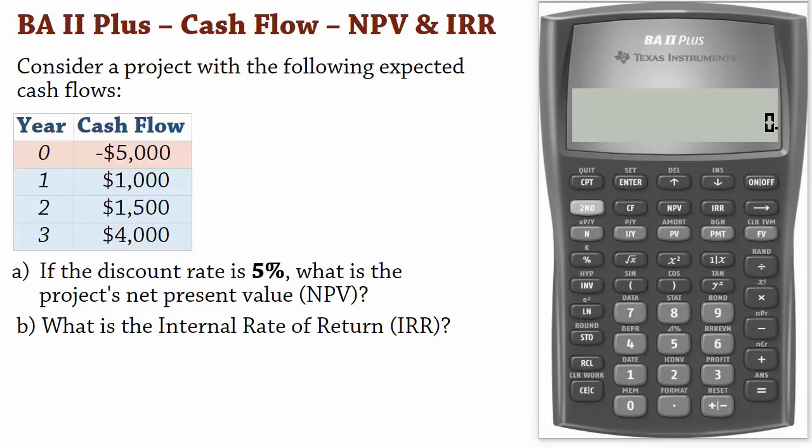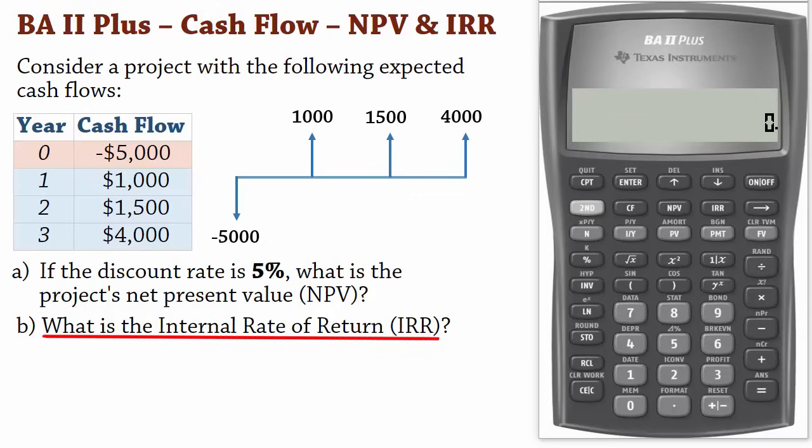Welcome to this BA II Plus calculator tutorial for calculating NPV and IRR. Consider a project with the following expected cash flows. If the discount rate is 5%, what is the project's net present value? And b, what is the internal rate of return IRR?